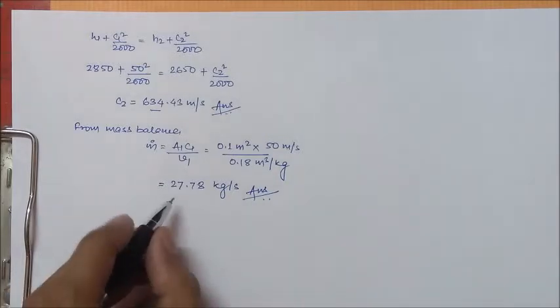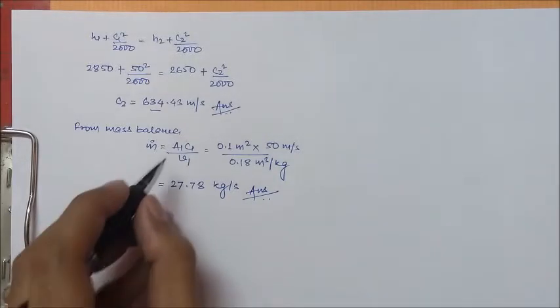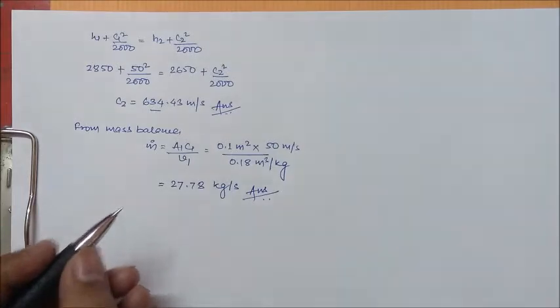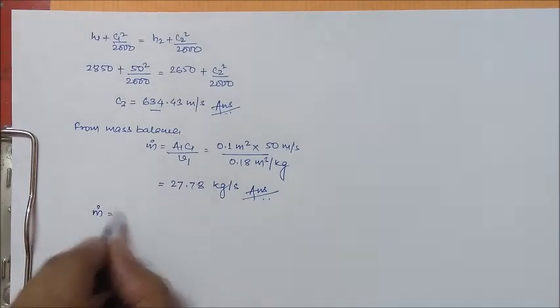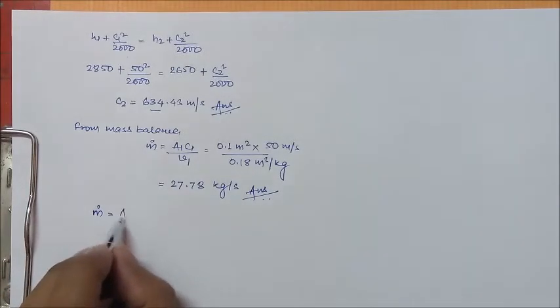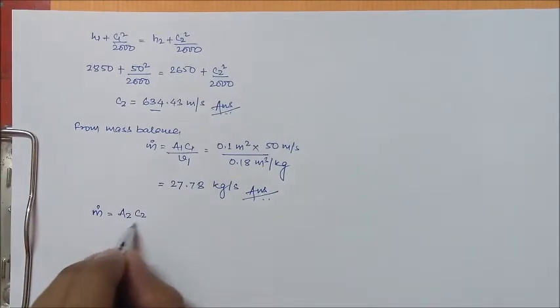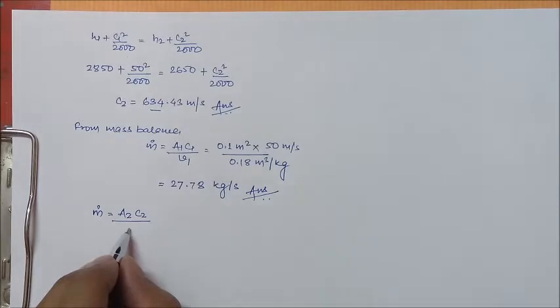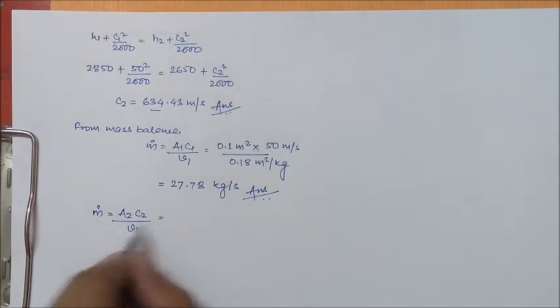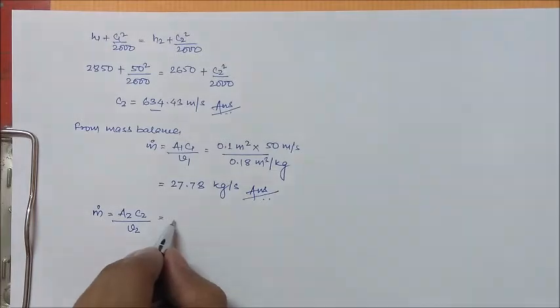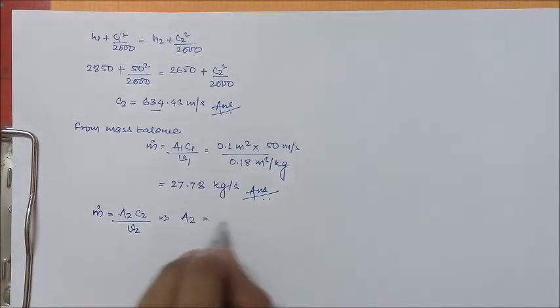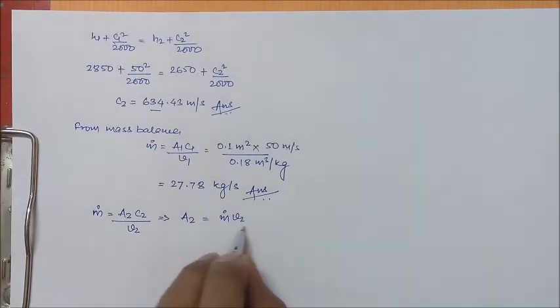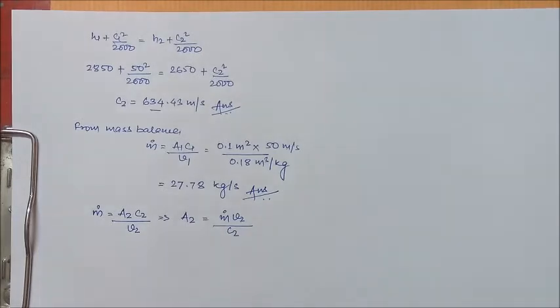Now we have to find out the exit area. For that, if we see our mass balance for the outlet, we have M dot equal to A2 C2 by V2. From here we can get A2 as M dot V2 by C2.